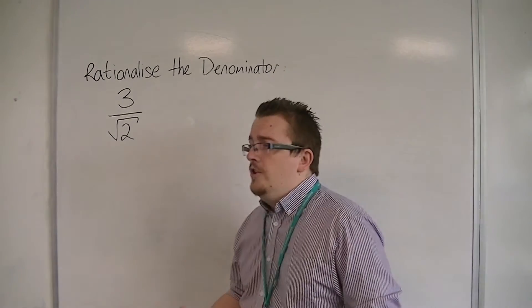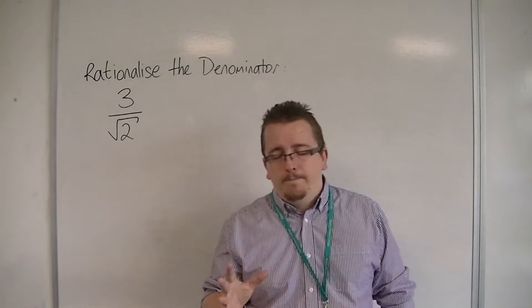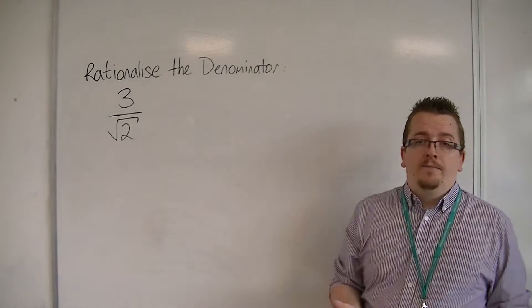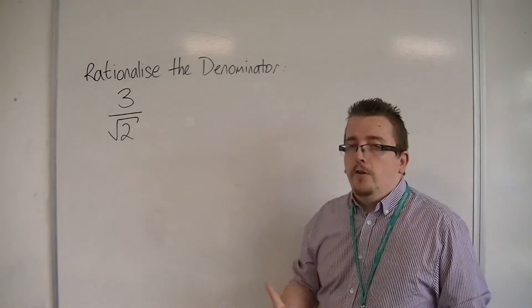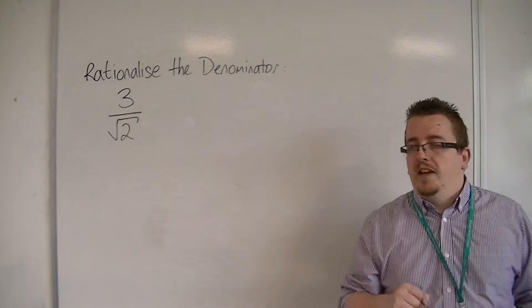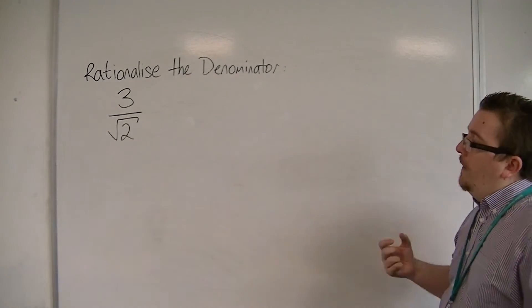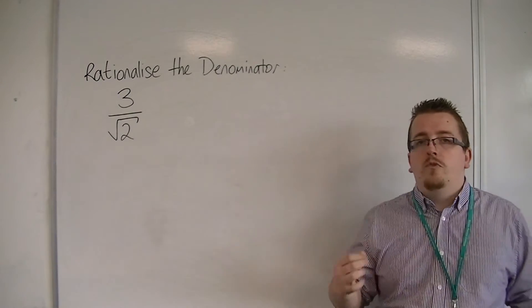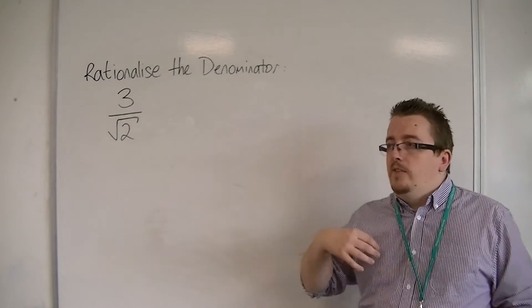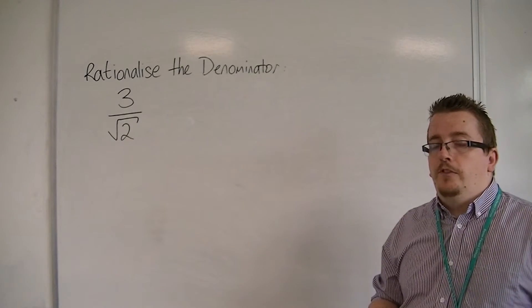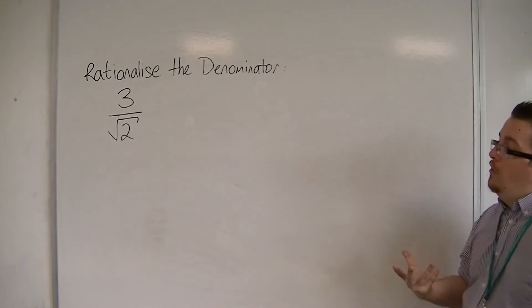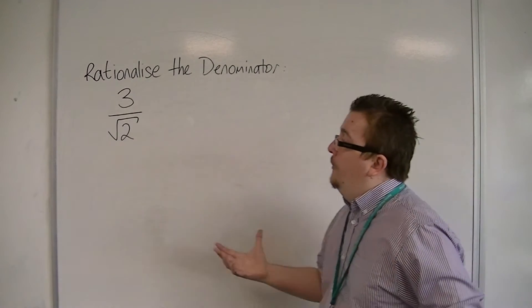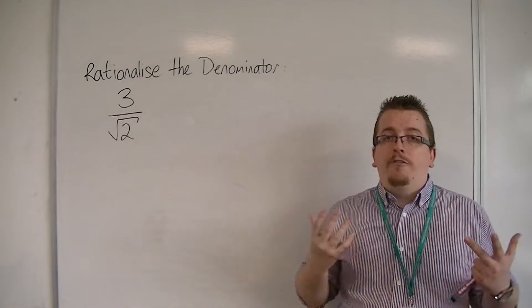Now, a good question at this point is why? Why would we bother? Well, before calculators and computers came along, dividing by the square root of 2 is inherently difficult to do by hand. The main problem is that the square root of 2, in order to be divided, would have to be rounded.